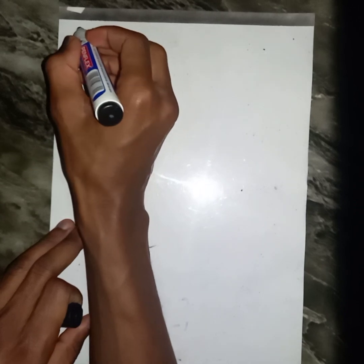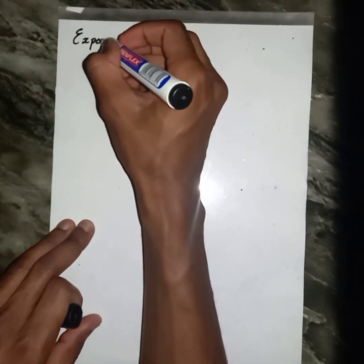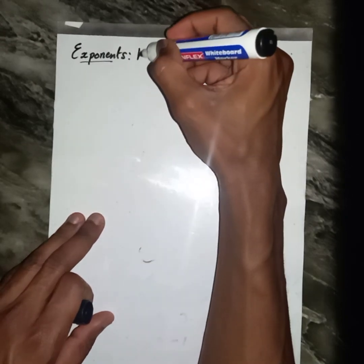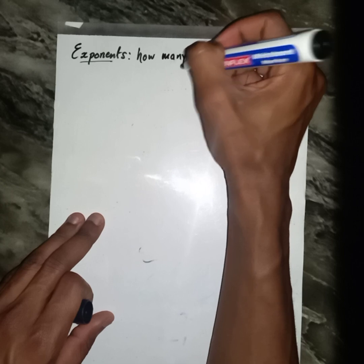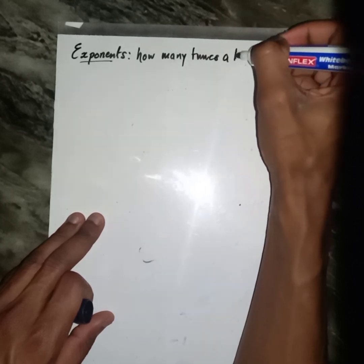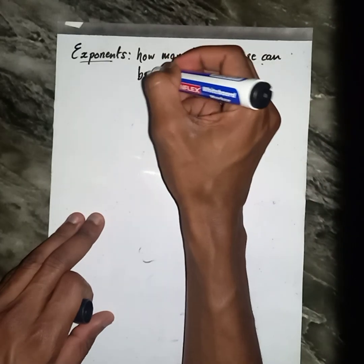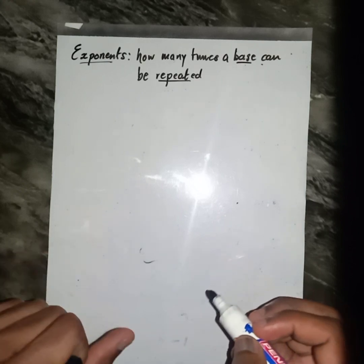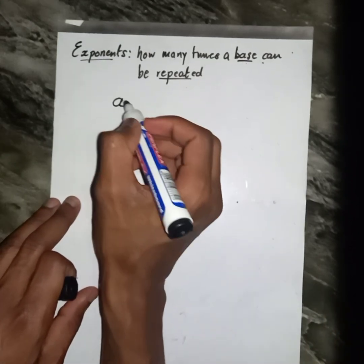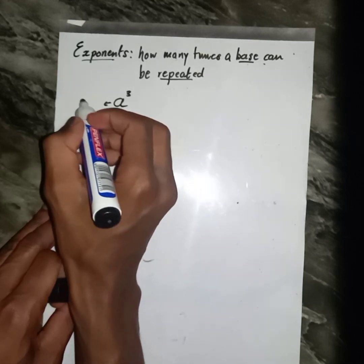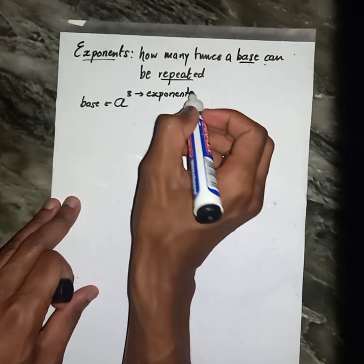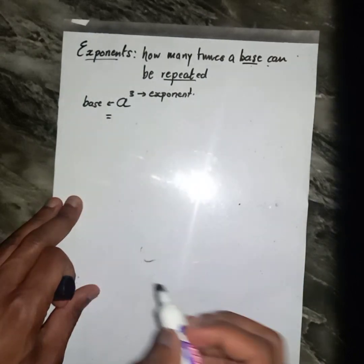Good day fellow. Today I just want to highlight the concept of exponents. What does the term exponent imply to us? It has to do with how many times a base can be repeated. If I were to give you a base of a with an exponent of 3, we have a base and also an exponent. Then I ask you to expand the following.